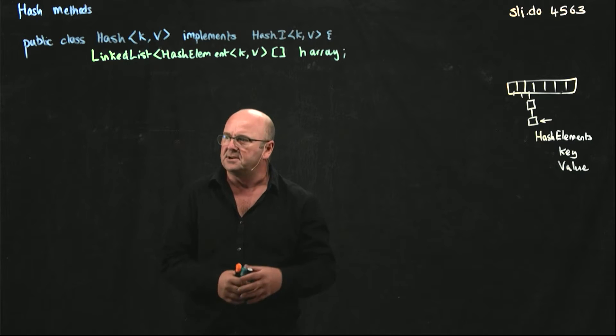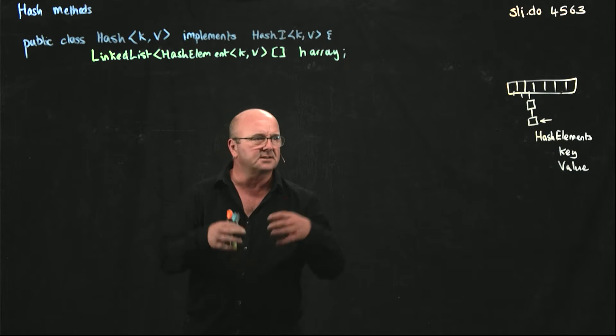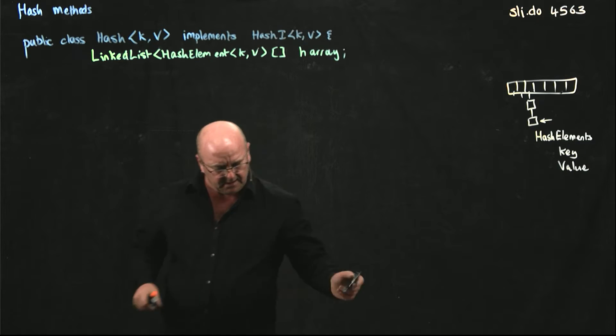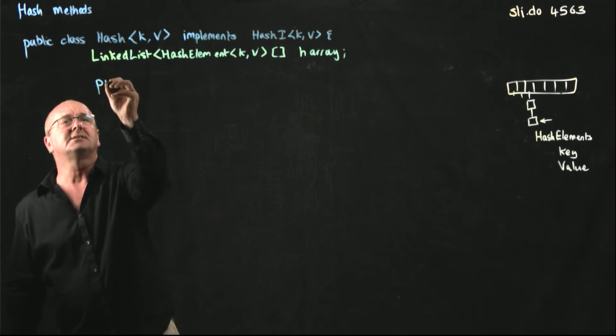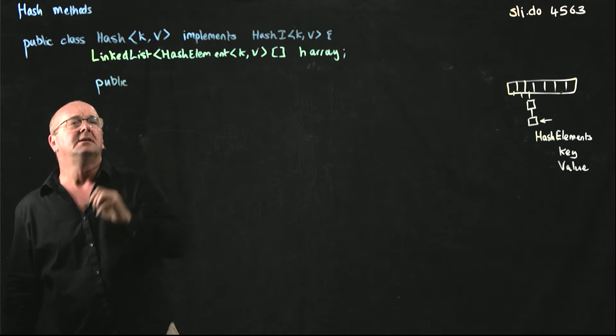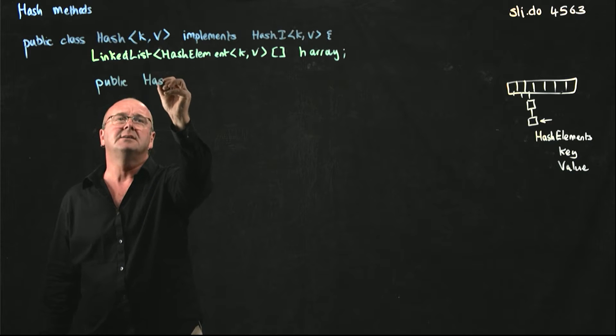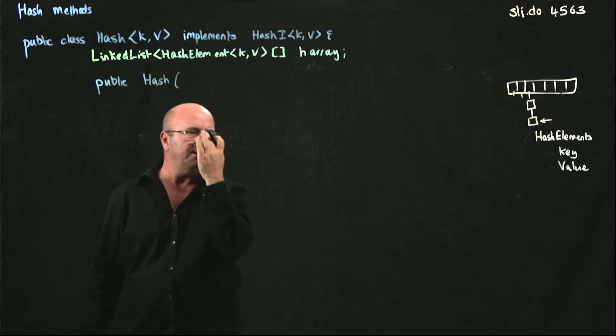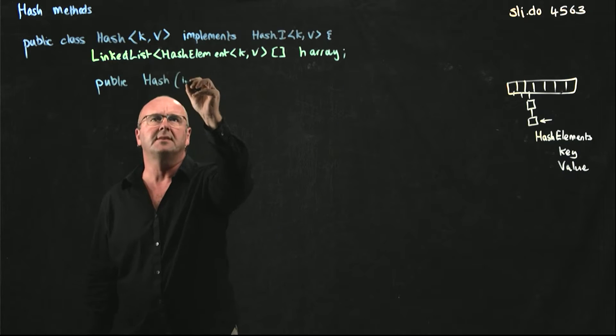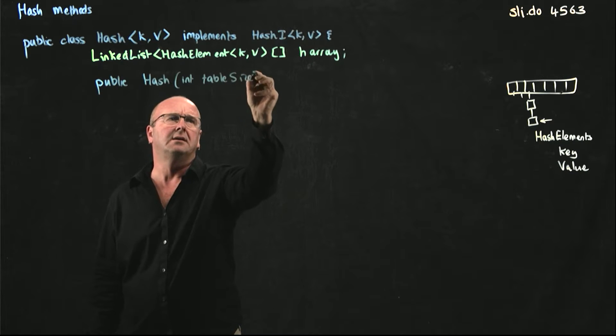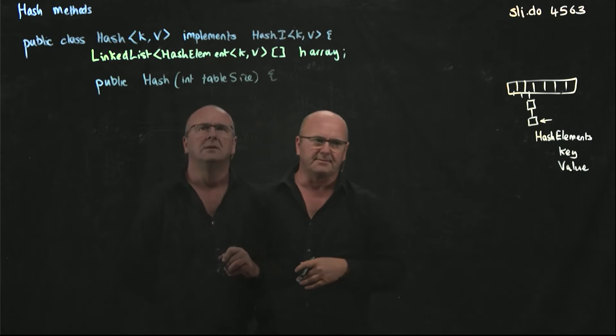So the first thing we want to do is have our constructor, and our constructor is going to initialize all of our variables. Our constructor is going to be public hash, and it's going to allow our users to define what size table they want to have.